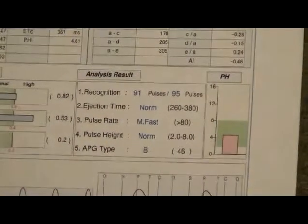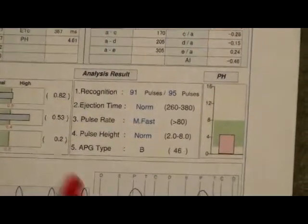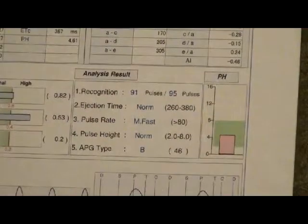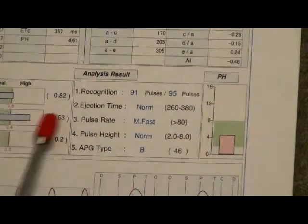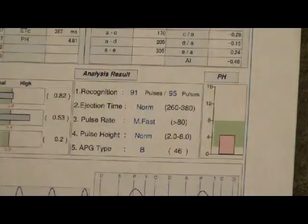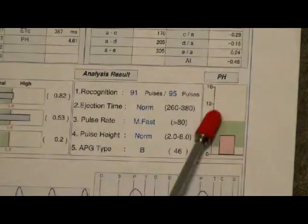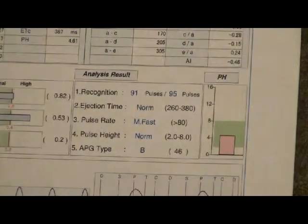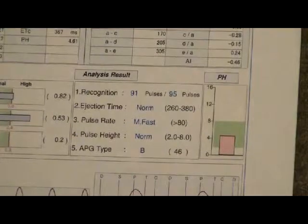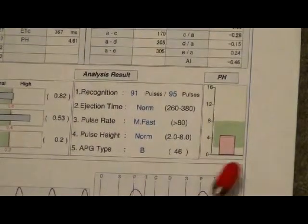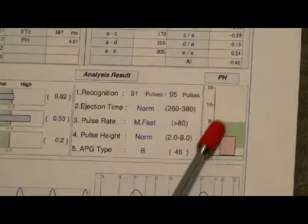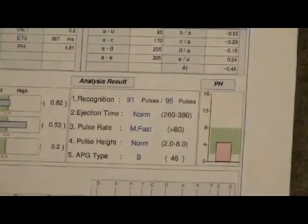Then we're going to move down to ejection — that's right here — and you can see whether that's normal or not. The pulse rate is going to be next, and it tells you whether that's within the normal range or not. The pulse height is displayed right over here, and also here on the other printout in this area. We'd like it to be within this green area here, which is considered normal.